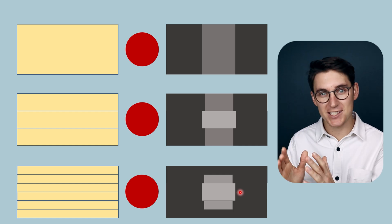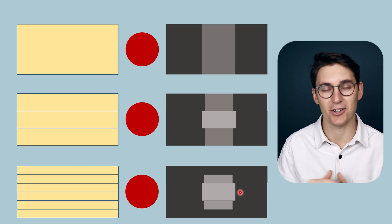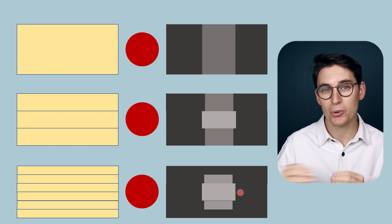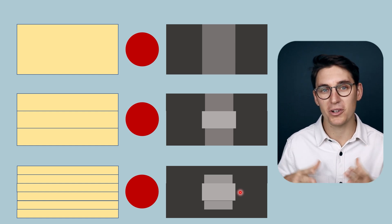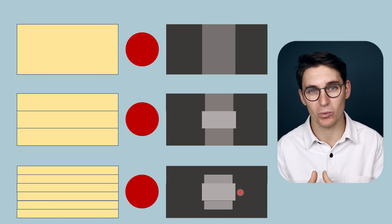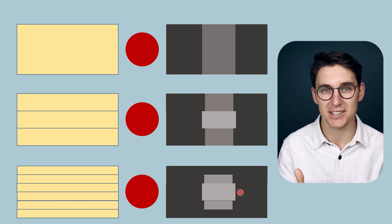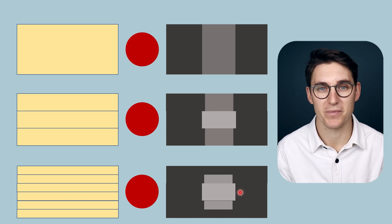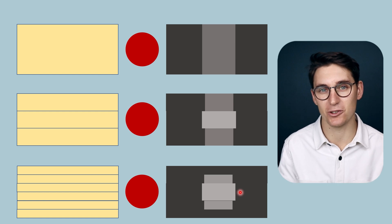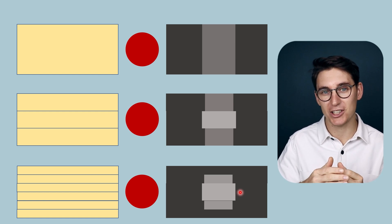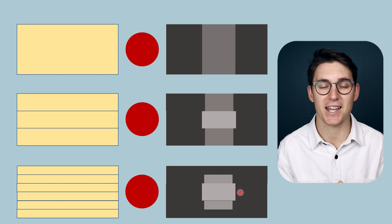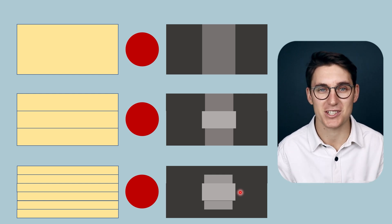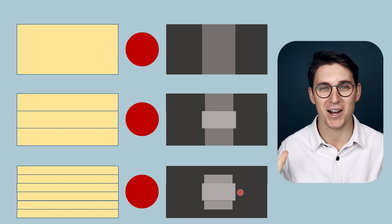So we've now looked at axial, lateral, and elevational resolution within the ultrasound image, and the various factors we can change to improve resolution. Often, improving resolution comes at a cost, and we need to trade off image type versus the resolution required for a diagnostic image. In the next talk, we'll look at temporal resolution — our ability to differentiate changes in tissue over time — which will round off this section on ultrasound resolution.